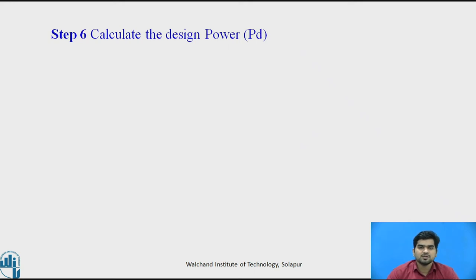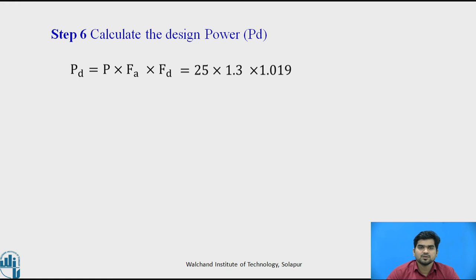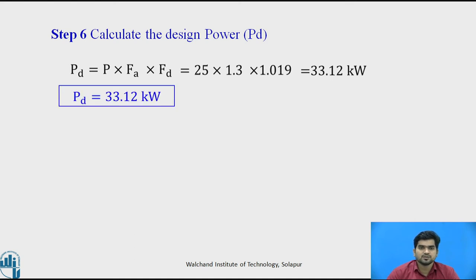In step number 6, calculate the design power. The design power for a flat belt drive is Pd = P × Fa × Fd. Substituting the load correction factor 1.3 and arc factor 1.019, the design power is 33.12 kilowatts. Note that the design power is greater than the actual power — you can pause and think about why that is.